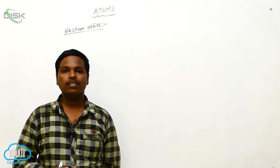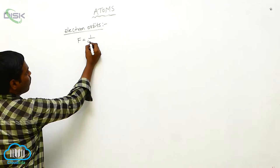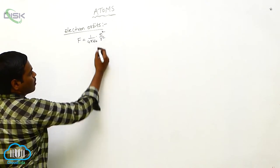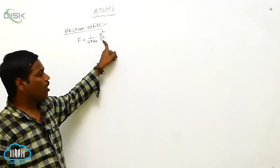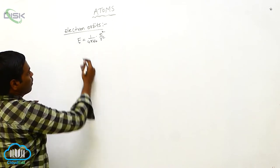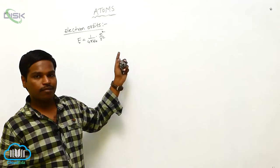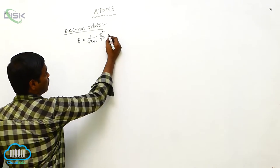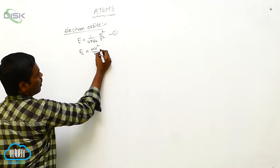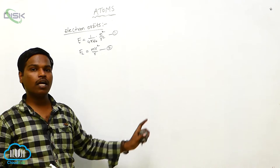In the electron orbits, electrons revolve around the nucleus. Between the nucleus and the electrons, a force is acting — that force is the electrostatic force. The electrostatic force F is equal to 1 over 4πε₀ times E squared over R squared, where R is the distance from the nucleus to the electron. This electrostatic force is balanced by the centripetal force, which is equal to MV² over R. Only when these two forces are balanced do the electrons revolve around the nucleus.